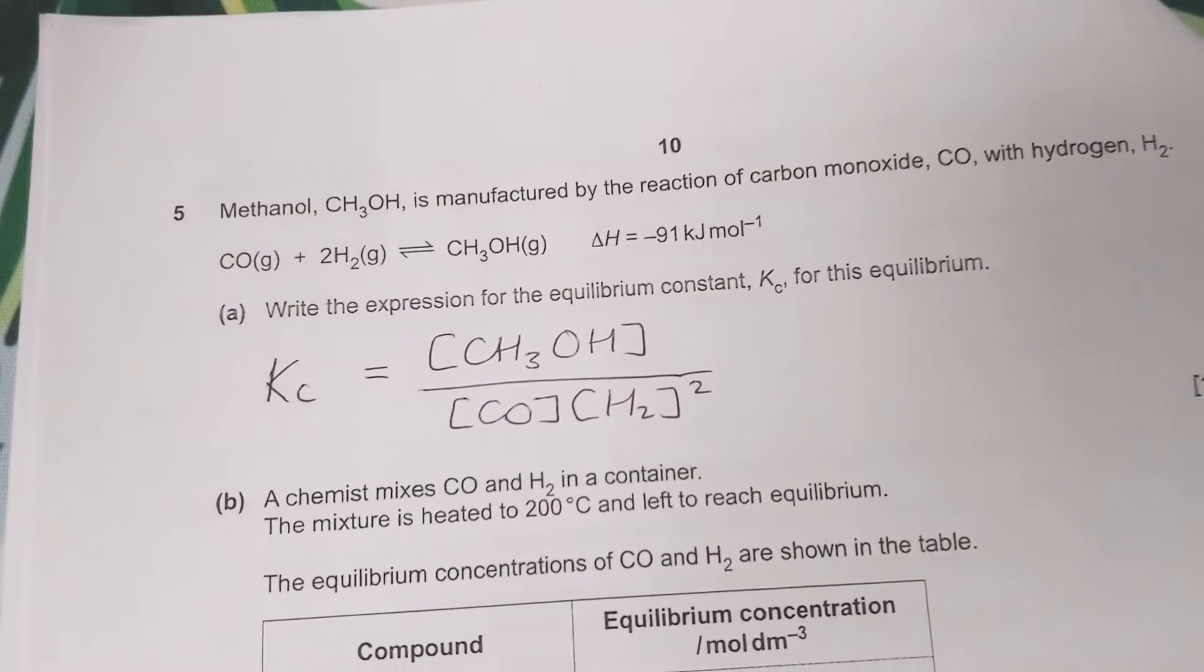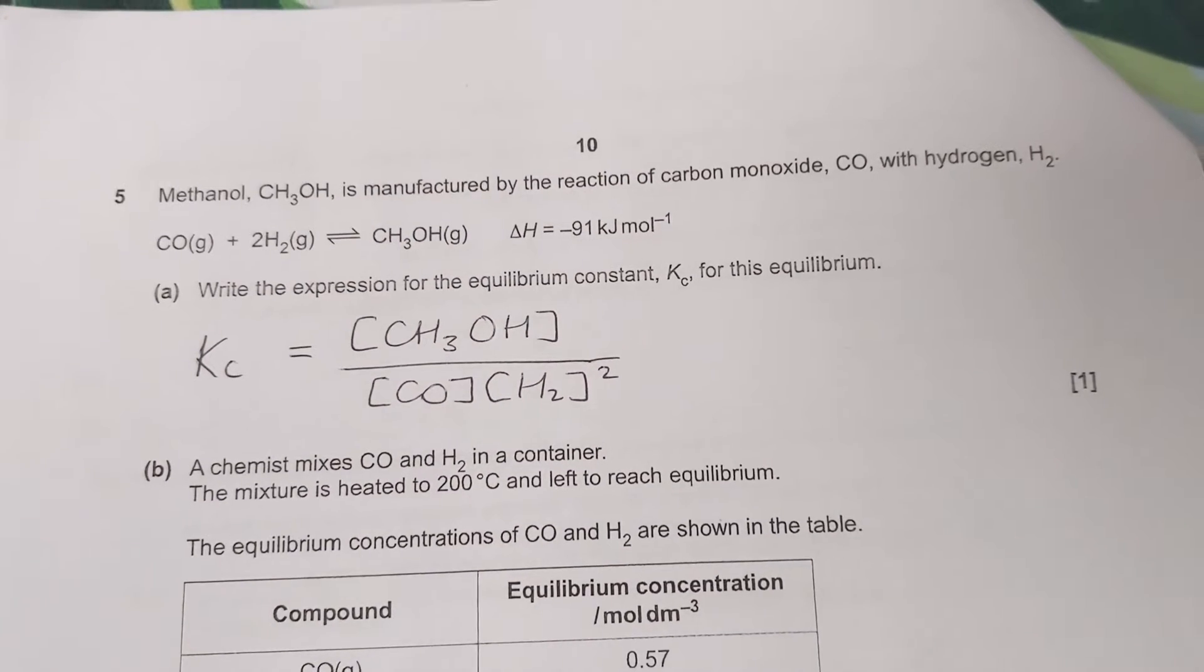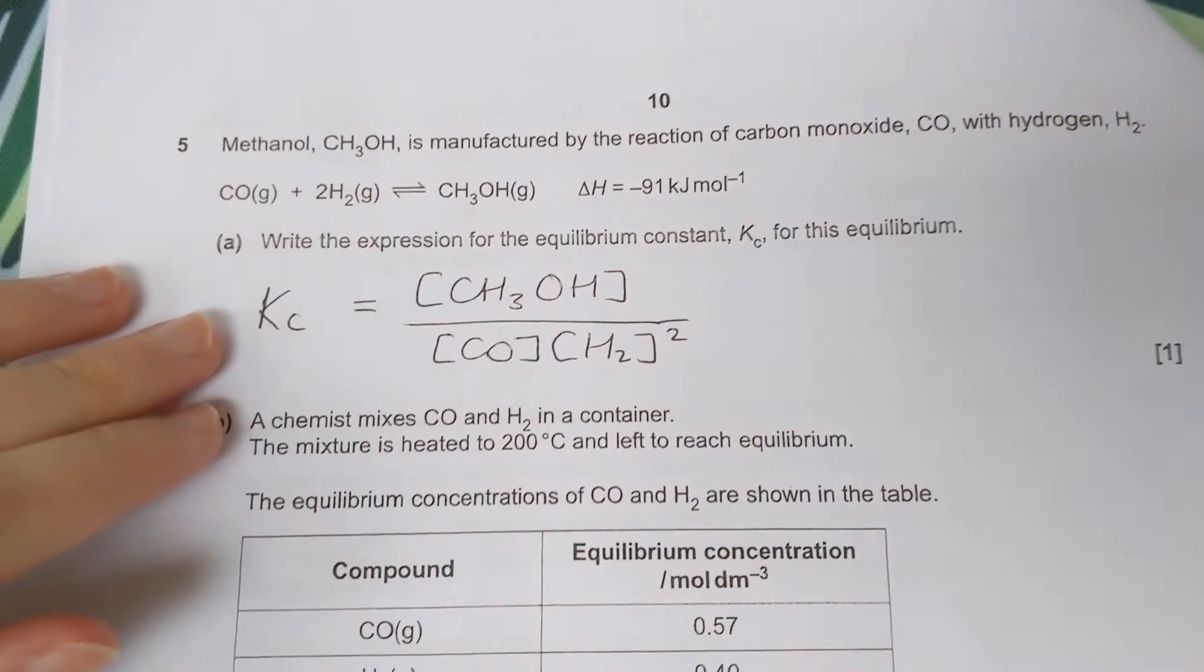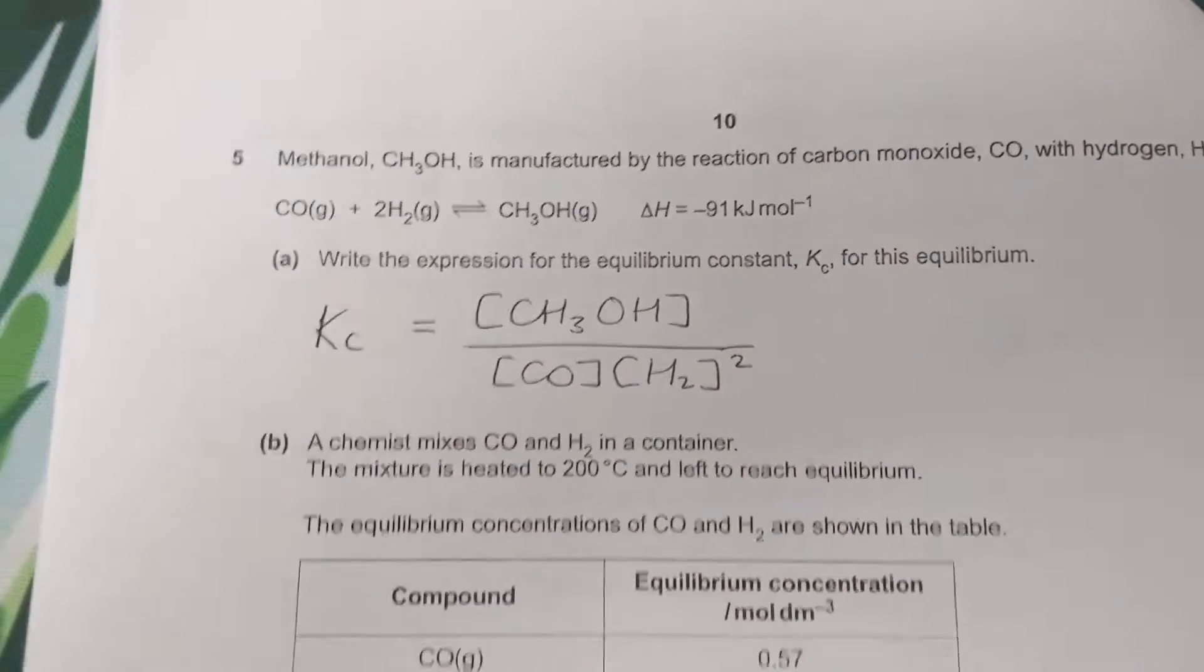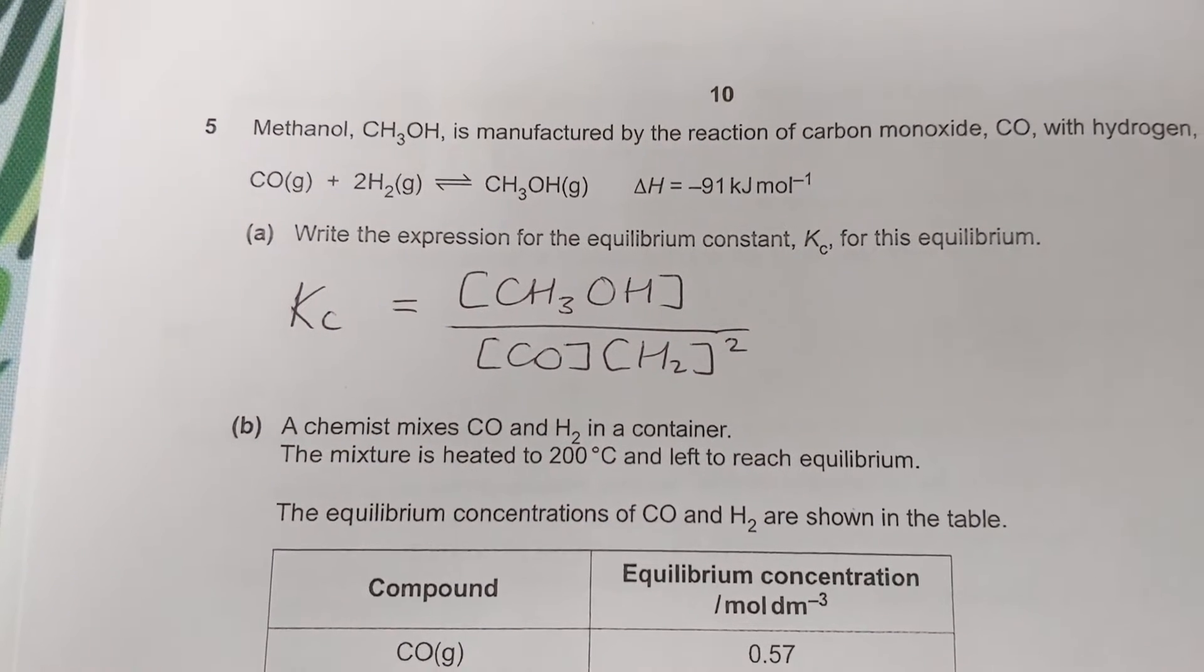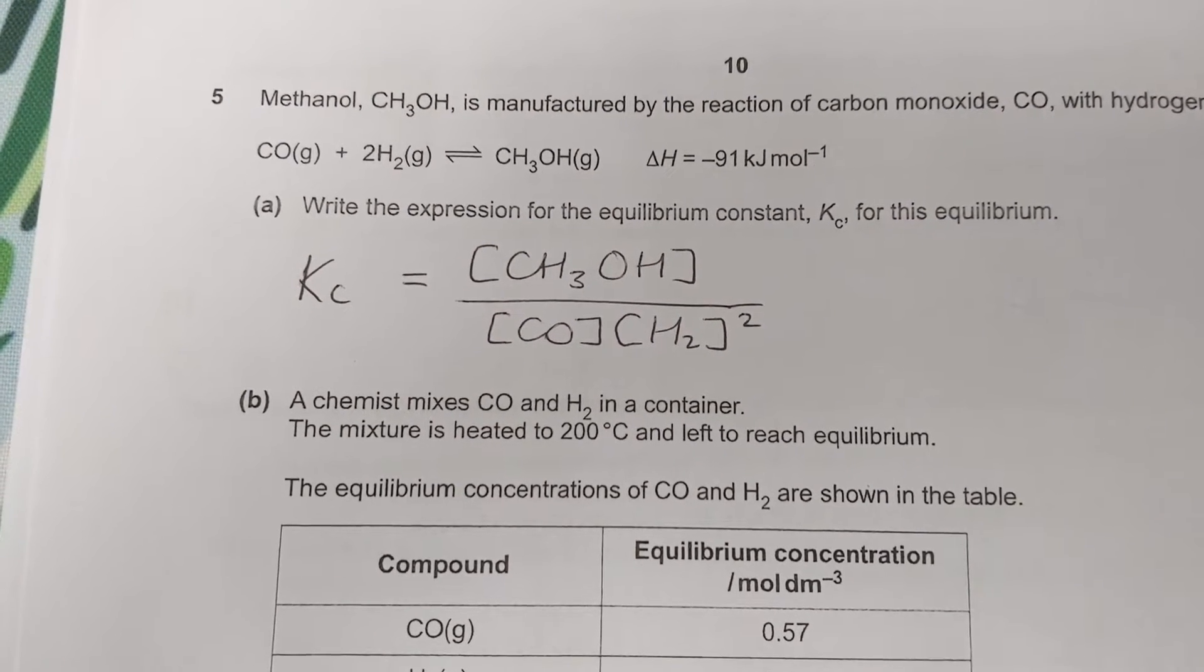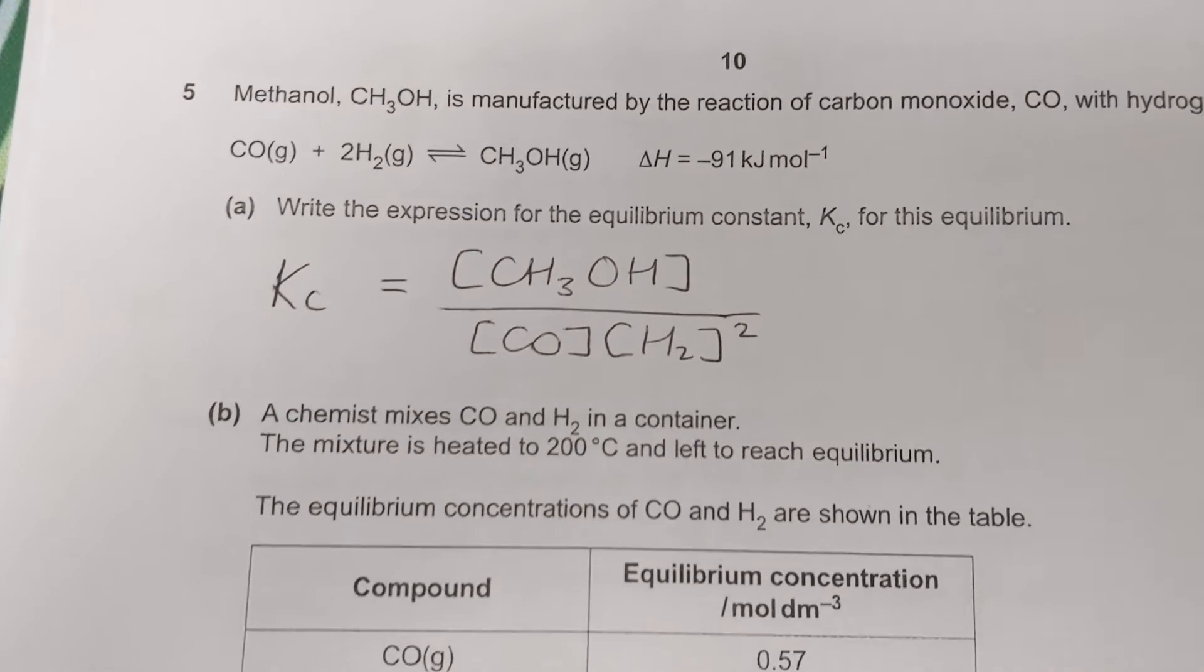Next question, we've got an equation for the production of methanol by reaction of carbon monoxide with hydrogen, asking us for the KC expression. Big K is the equilibrium constant and little c stands for concentration. We write this expression as concentrations of products raised to the power of the number of moles times together, if there's more than one product, over concentrations of reactants times together, raised to their power of number of moles.